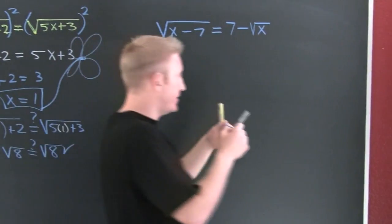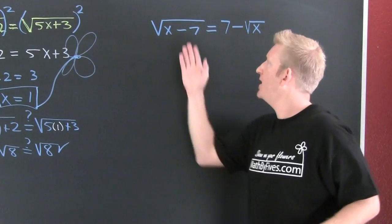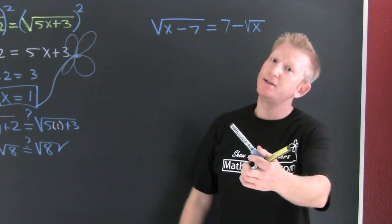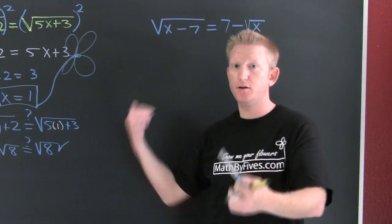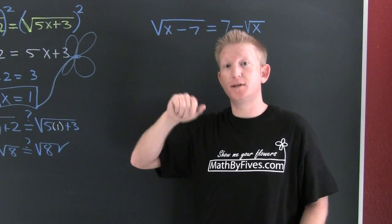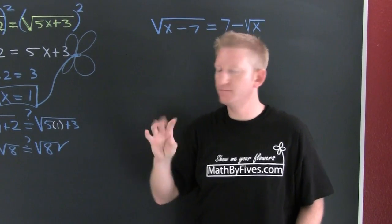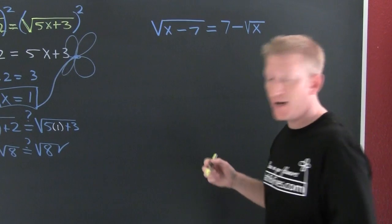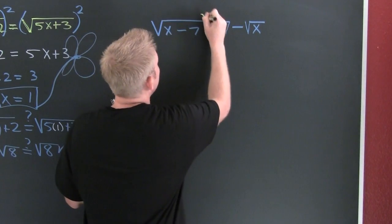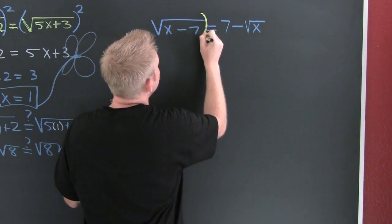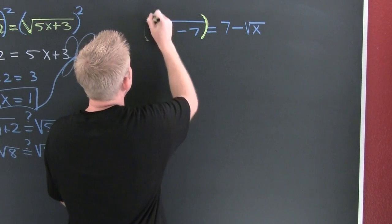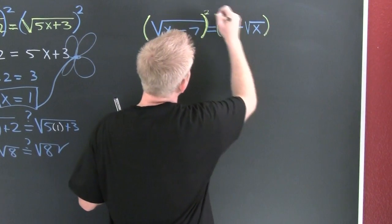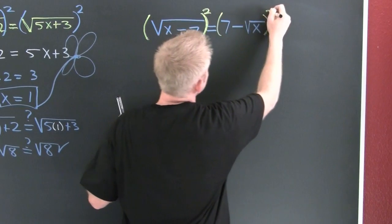Coming over here, what we have is we have a root equal to some binomial. We have one isolated, let's stick with it. Now that I have a root isolated, I'm going to square both sides, but remember whenever you square both sides you have to check it because you could be introducing extraneous roots.